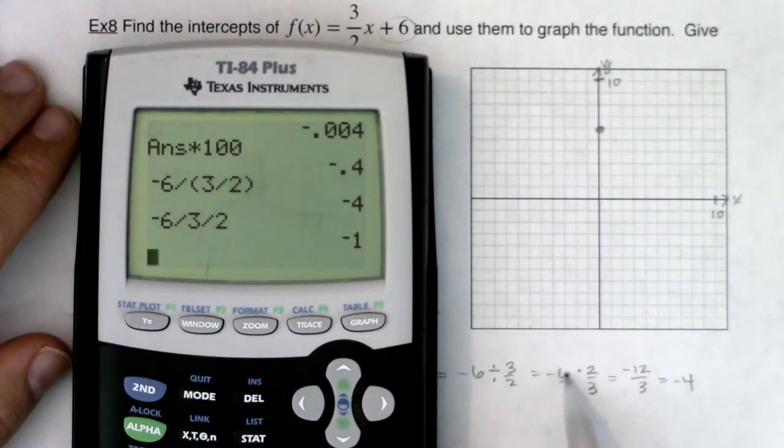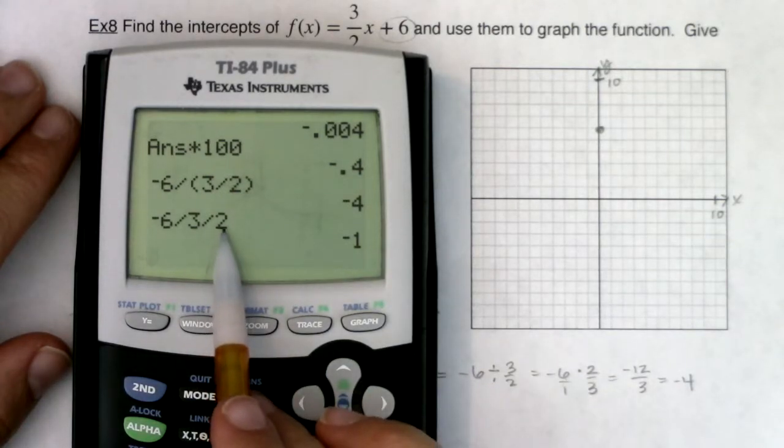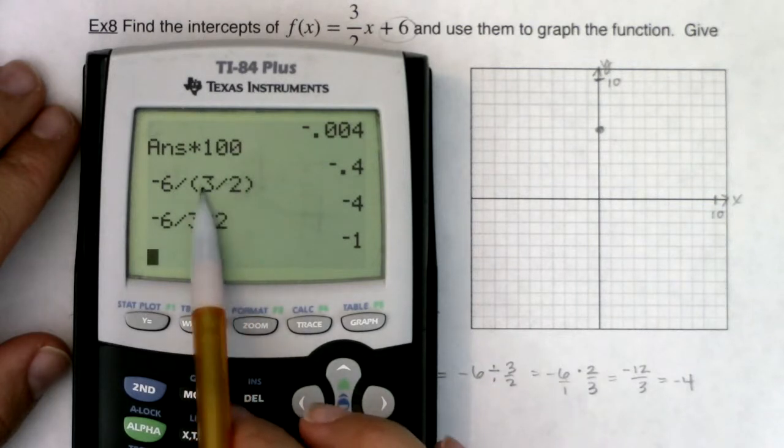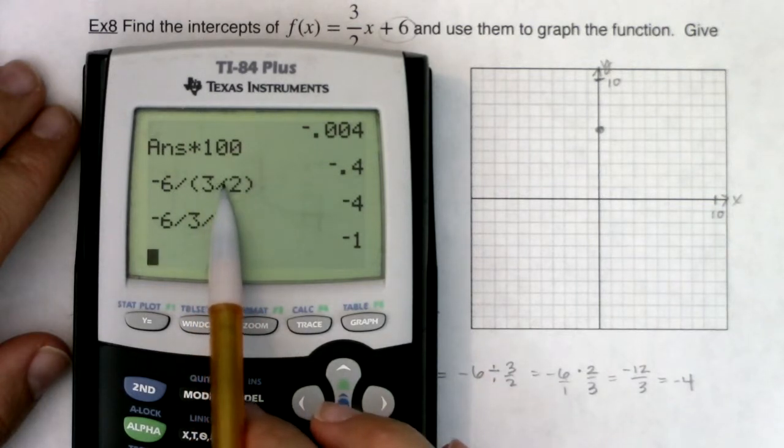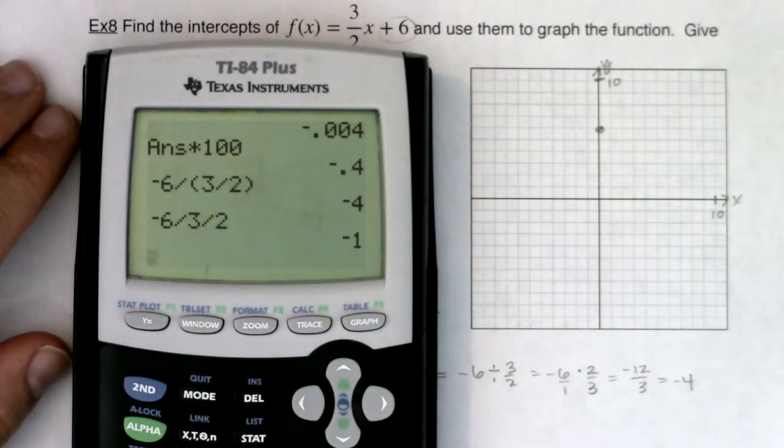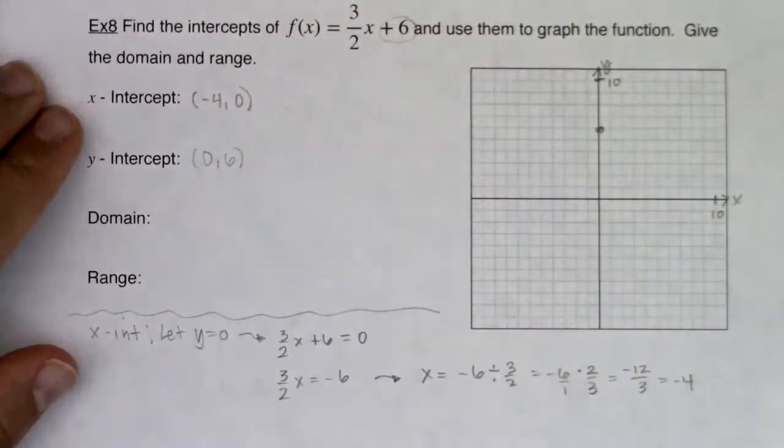But I want you to see what really happened. When I did negative 6 divided by three halves, I did negative 6 divided by 3, but I multiplied by 2. You see this 2 is up in the numerator. That's not what's happening if you enter that expression into your calculator. It's not going to divide by three halves. It's not going to multiply by the reciprocal. It's going to divide by 3 and then divide by 2. And that's why you're getting a different number. So just be careful when all of that is happening.